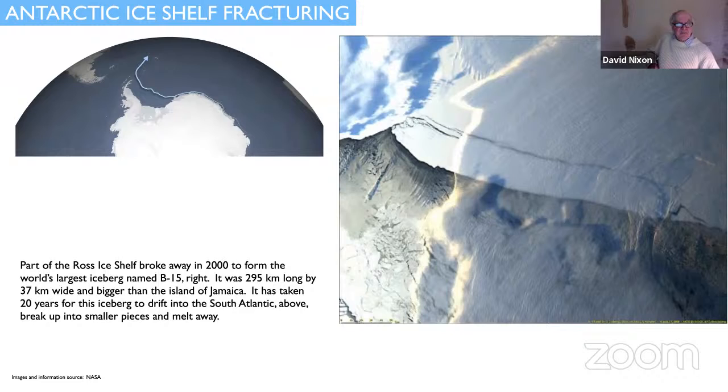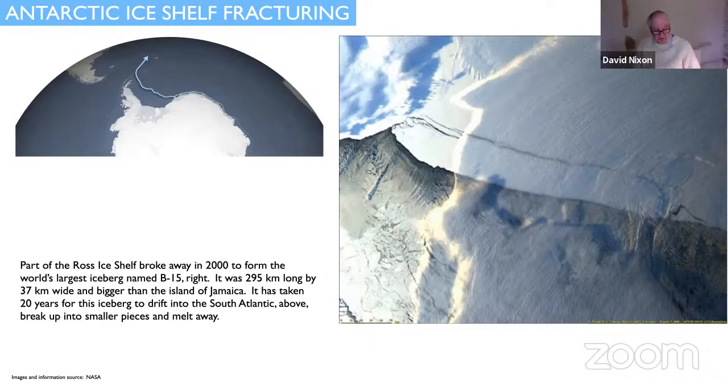Antarctic ice shelf fracturing has been going on for a while. This is an example of a piece of the Ross ice shelf that broke away in 2000 to form the world's largest iceberg named B-15. It was 295 kilometers long by 37 kilometers wide and bigger than the island of Jamaica. It took 20 years for this iceberg to drift into the South Atlantic, break up into smaller pieces and melt away, which it's done only very recently.